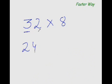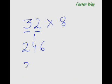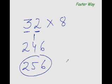Let's take a smaller number: what is 32 times 8? 3×8 is 24, and 2×8 is 16. Write 1 and 6; 24+1 is 25. So the answer is 256. It works really well.